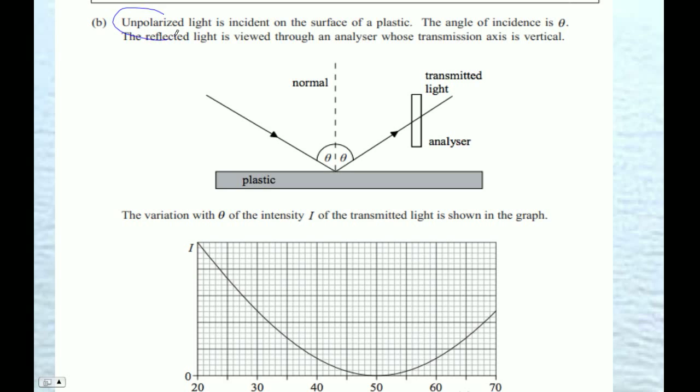Unpolarized light, that's here, is incident on this surface of the plastic. So the Brewster's angle does apply to this. And there's some angle here, and they're going to change this angle. They're going to make it more and less. And then we look at it through a vertically oriented analyzer. And so that's our intensity here that we're looking at, after it bounces off the surface and goes through that filter.